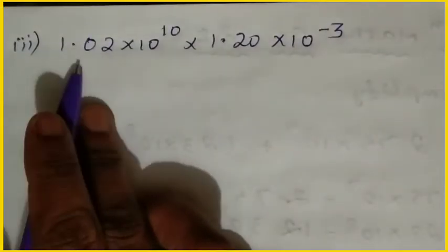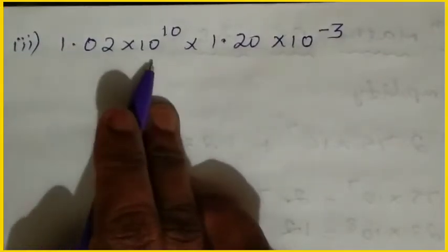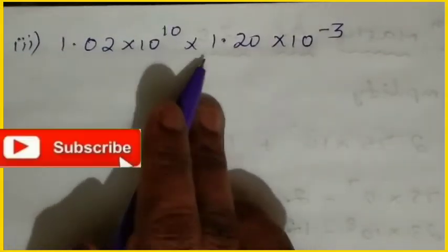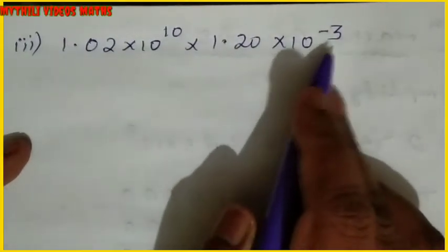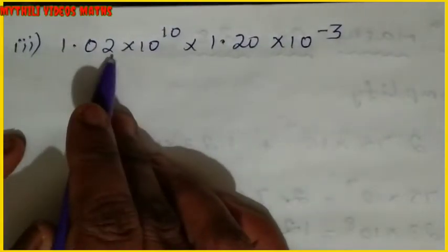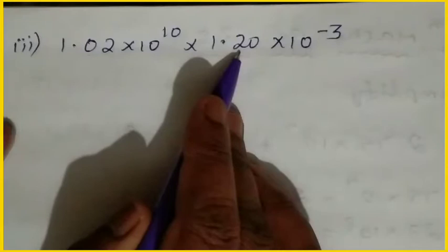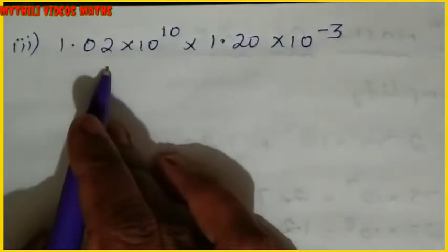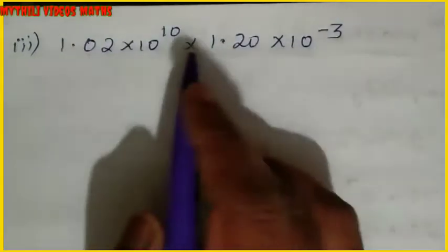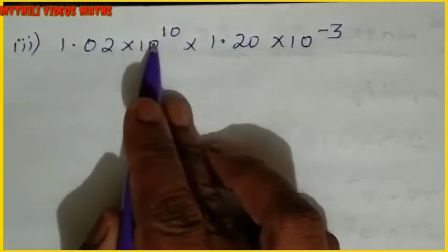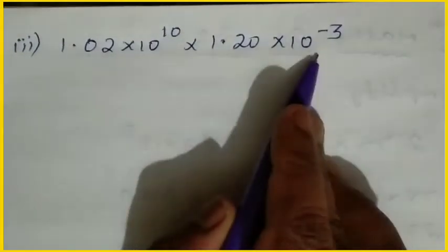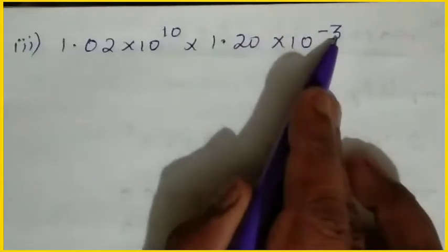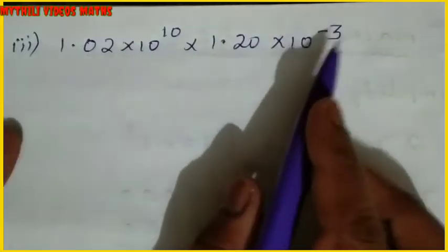Now we will see the third sum: 1.02 into 10 power 10 multiplied by 1.20 into 10 power minus 3. We have to multiply these two terms. Since both have base 10, we add the powers. We multiply the decimal parts and add the exponents.